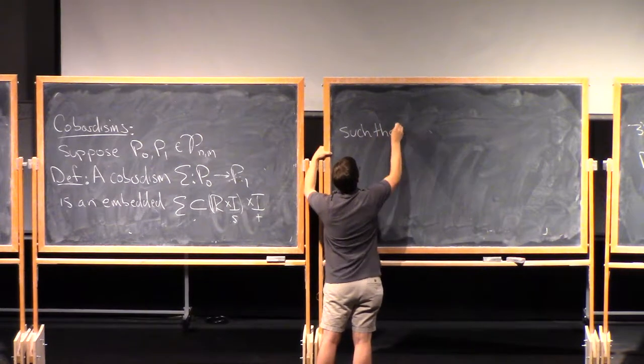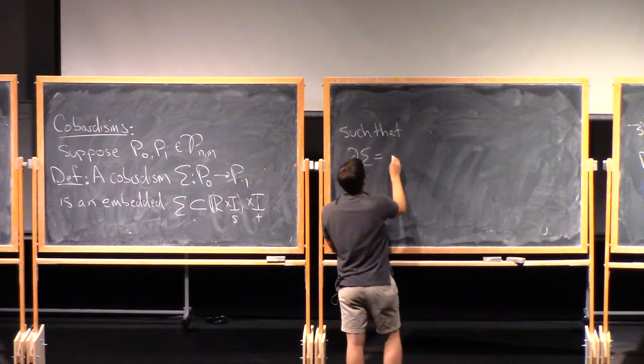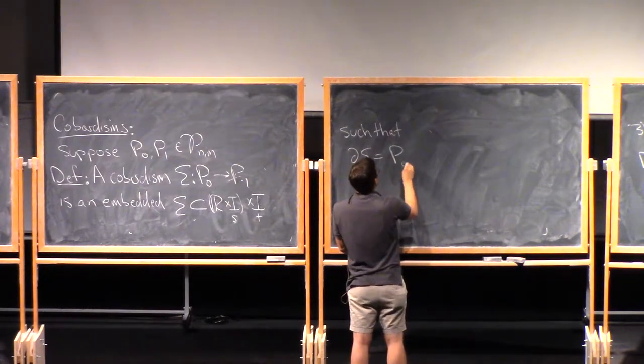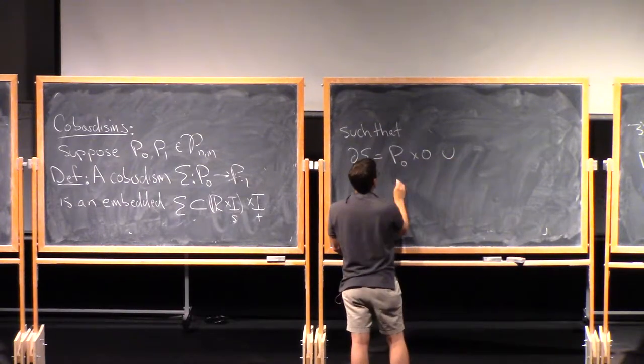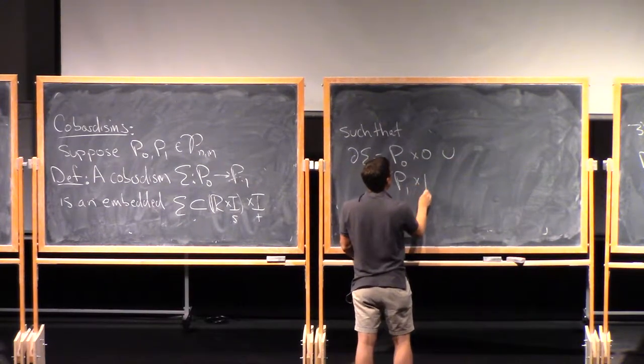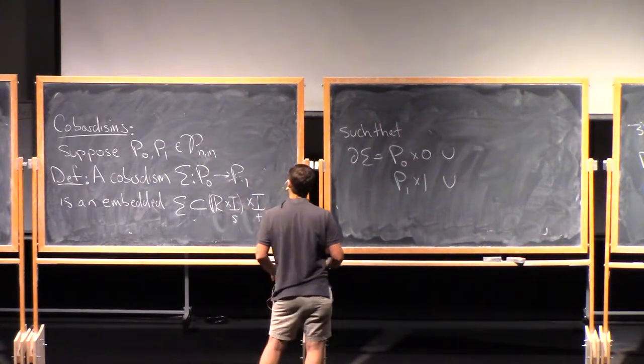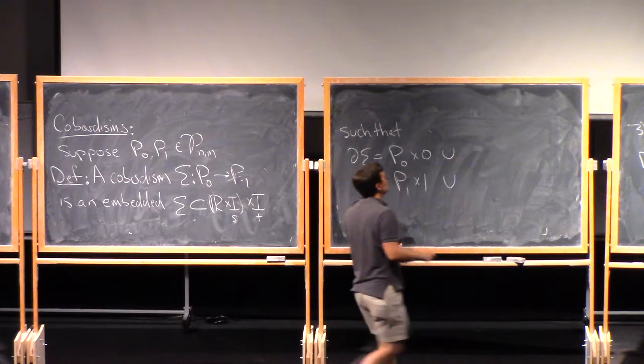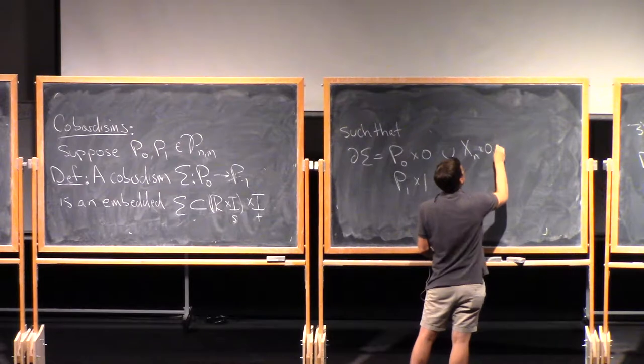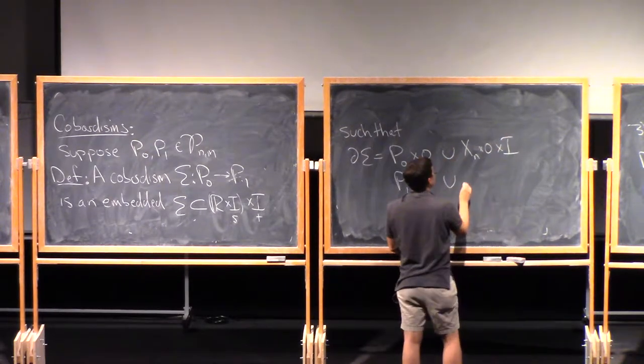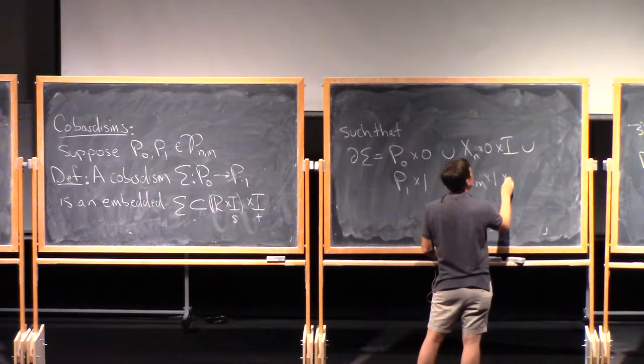Such that the boundary of this sigma has a piece that looks like P0 times 0, a piece that looks like P1 times 1, but it also has pieces in this boundary coming from the x's, so union xn times 0 times I, union xm times 1 times I.